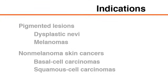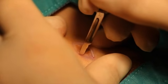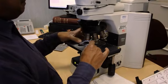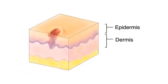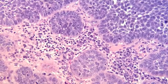An elliptical excision of the skin is typically performed on pigmented skin lesions, such as dysplastic nevi and melanomas, and non-melanoma skin cancers, including basal cell carcinomas and squamous cell carcinomas, for which the diagnosis has already been established by prior shave or punch biopsy. In lesions with a high clinical suspicion of cancer, an elliptical excision may serve as a single-stage diagnostic and therapeutic intervention. Elliptical excision specimens allow for histopathological examination of the skin, including the epidermis, dermis, and subcutaneous fat, as well as determination of the depth of the lesion and demonstration of clear margins within the surrounding tissues.